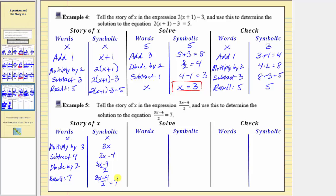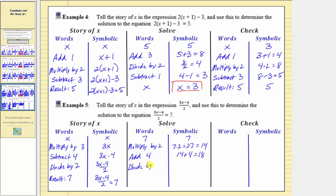Now to solve, we'll start with the result of seven and undo each of these operations in reverse order to get back to x. So we start with seven. To undo divide by two, we multiply by two: seven times two equals fourteen. Next, to undo subtract four, we add four: fourteen plus four equals eighteen. Next, to undo multiply by three, we divide by three: eighteen divided by three equals six, which brings us back to x. Our solution is x equals six.